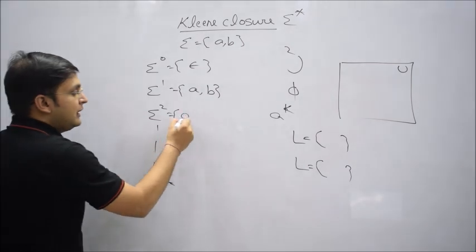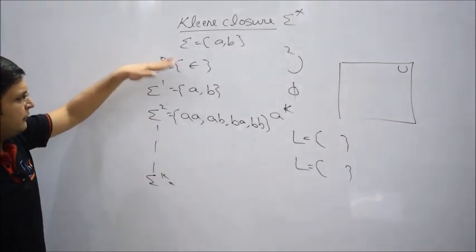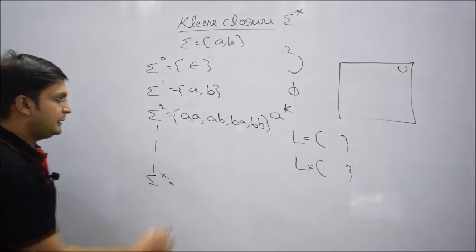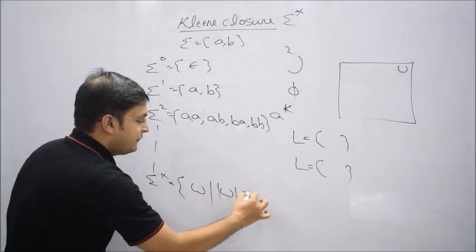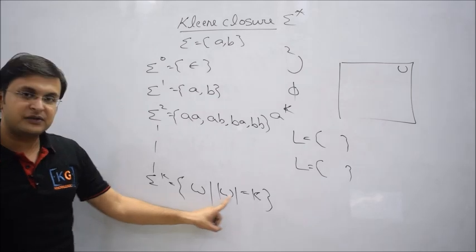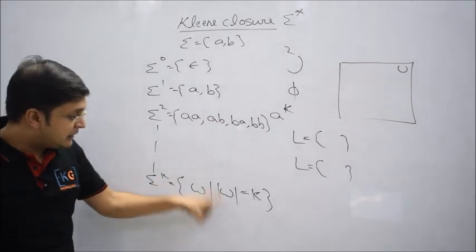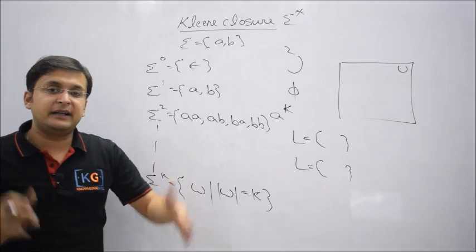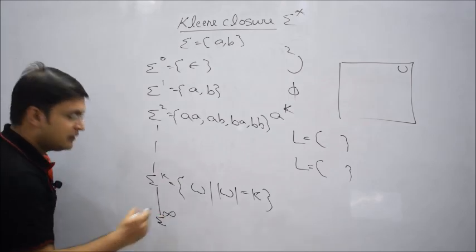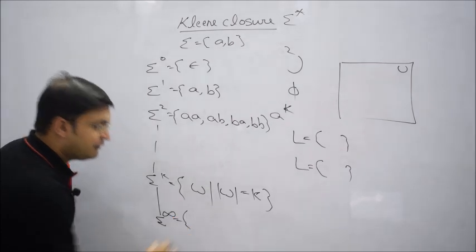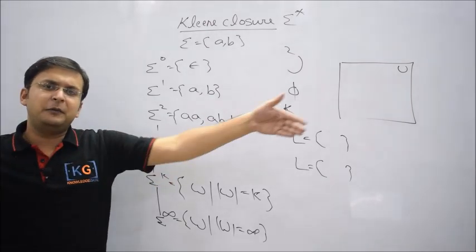Sigma raised to power k contains all strings w such that the length of w is exactly equal to k. So sigma^k contains all strings w where |w| = k, since symbols belong to sigma. Taking this logic up to infinity, sigma^infinity would contain all strings w whose length is infinity — meaning the length of a string could be anything.